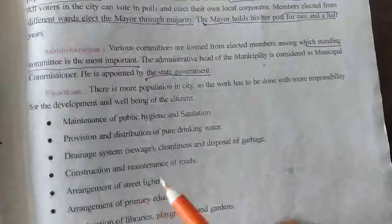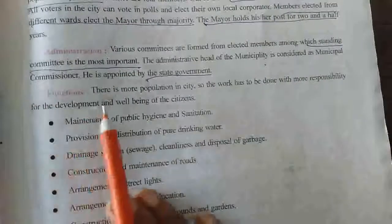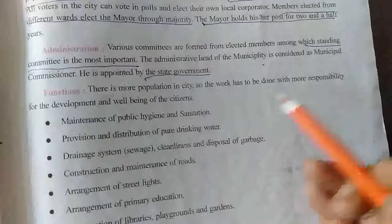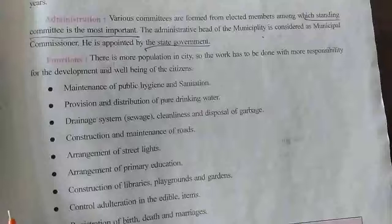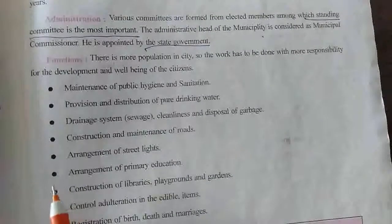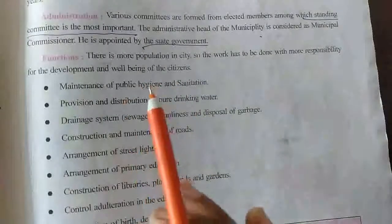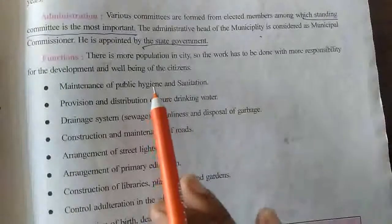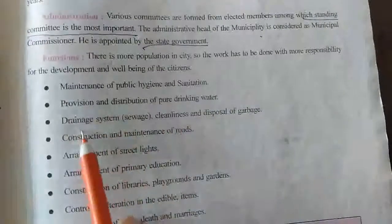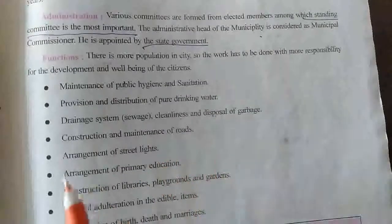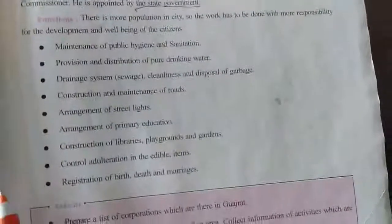Regarding the formation and functions: cities have a larger population, so there is more responsibility for the development and well-being of citizens. The work of the corporation includes: maintenance of public hygiene and sanitation, provisions and distribution of pure drinking water, drainage and sewage systems, cleanliness and disposal of garbage, construction and maintenance of roads, and arrangement of street lights and primary education.